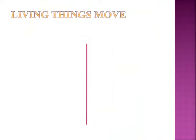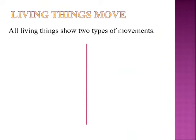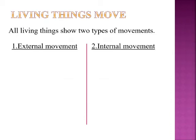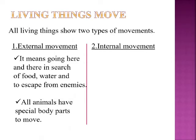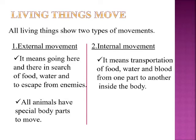The next feature is living things move. All living things show two types of movements. First is external movement, and the second one is internal movement. External movement means going here and there in search of food, water, and to escape from enemies. All animals have special body parts to move. Internal movement means transportation of food, water and blood from one part to another inside the body.